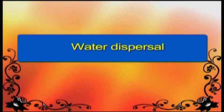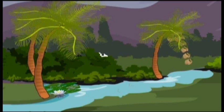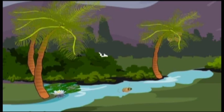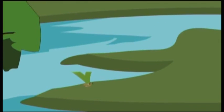Water dispersal. Seeds of plants that grow in or near flowing water are usually dispersed by water. These have fruits and seeds that can float in water.